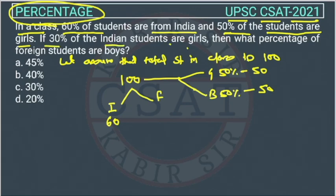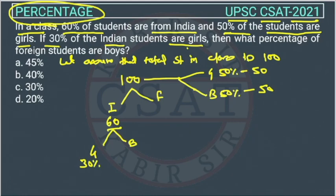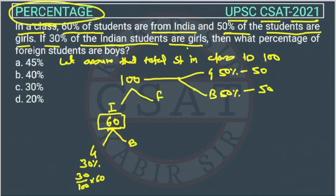Now it is given that 30% of the Indian students are girls. Indian students are 60, so girls among Indians are 30% of 60. So 30% of 60 will be 18. There are 18 Indian girls.